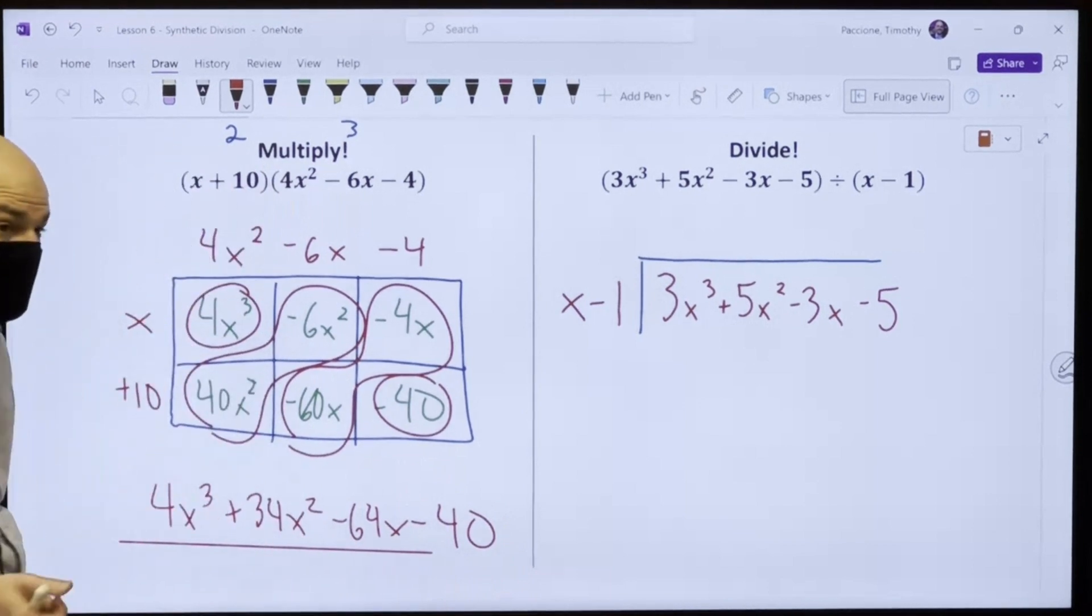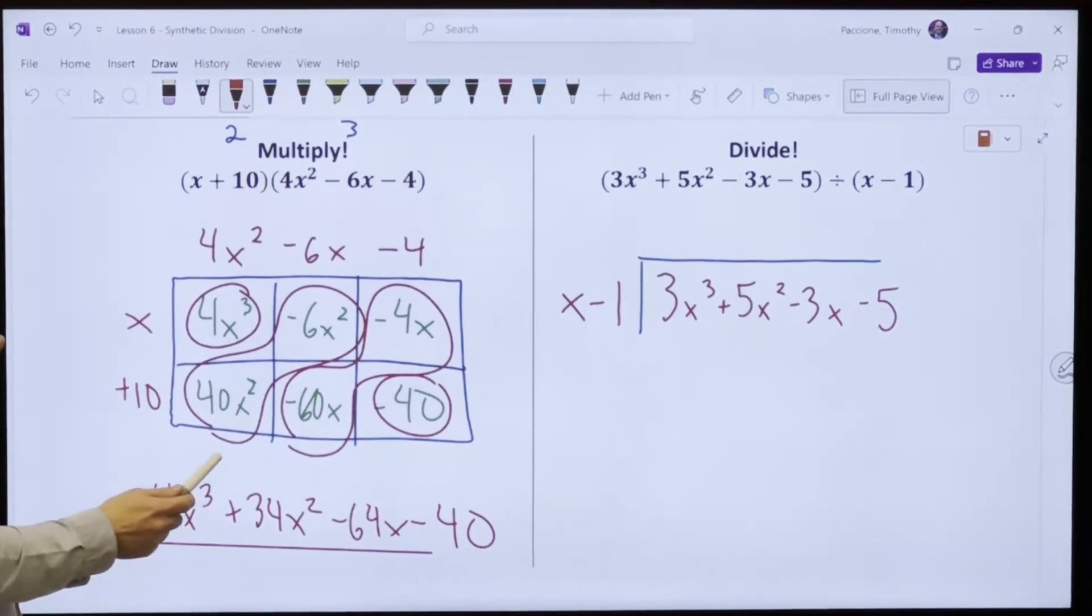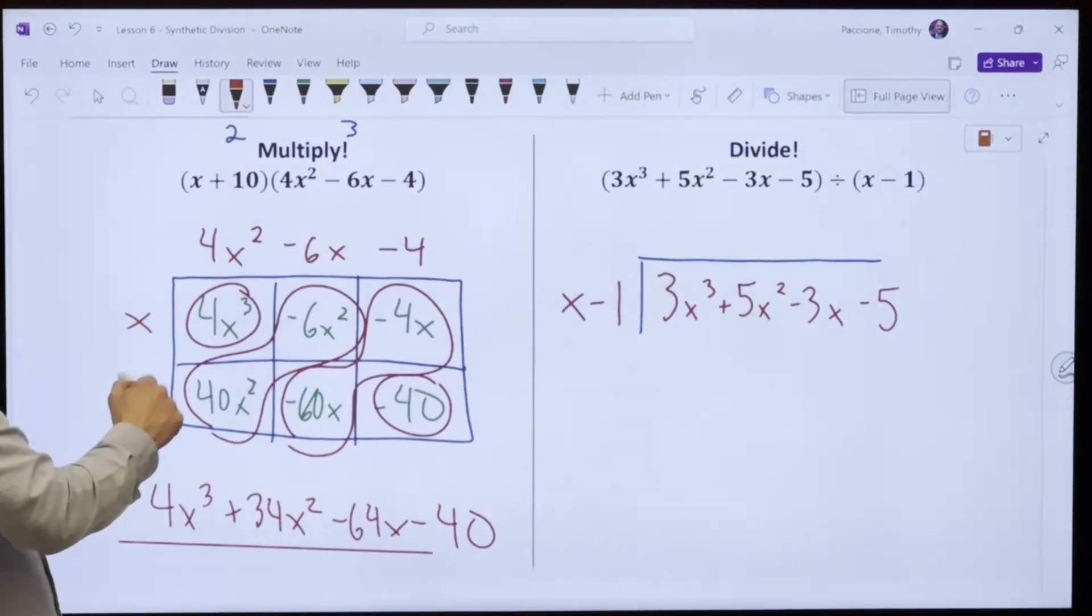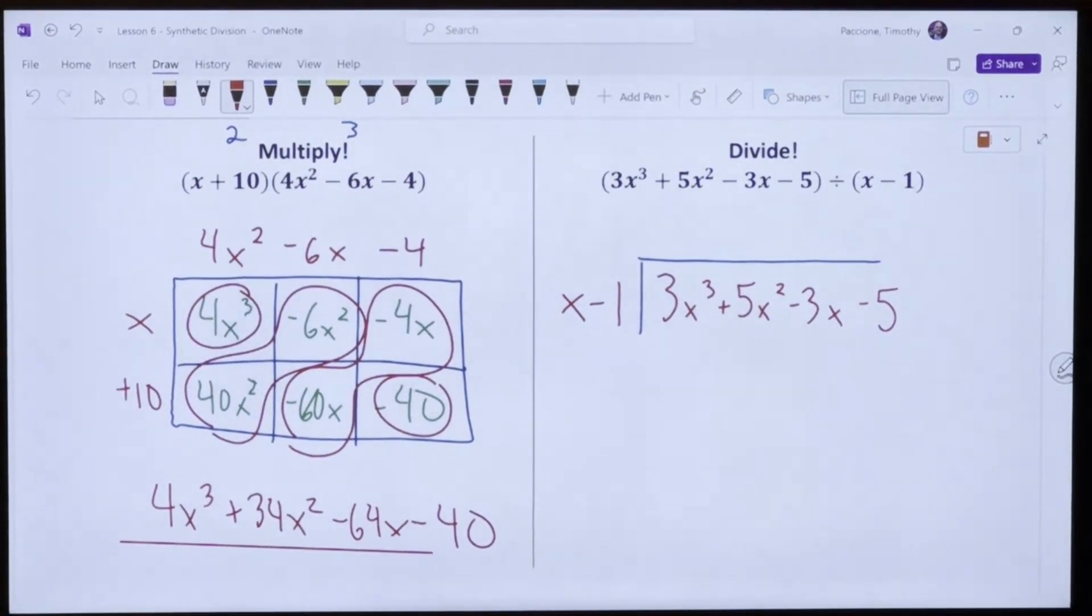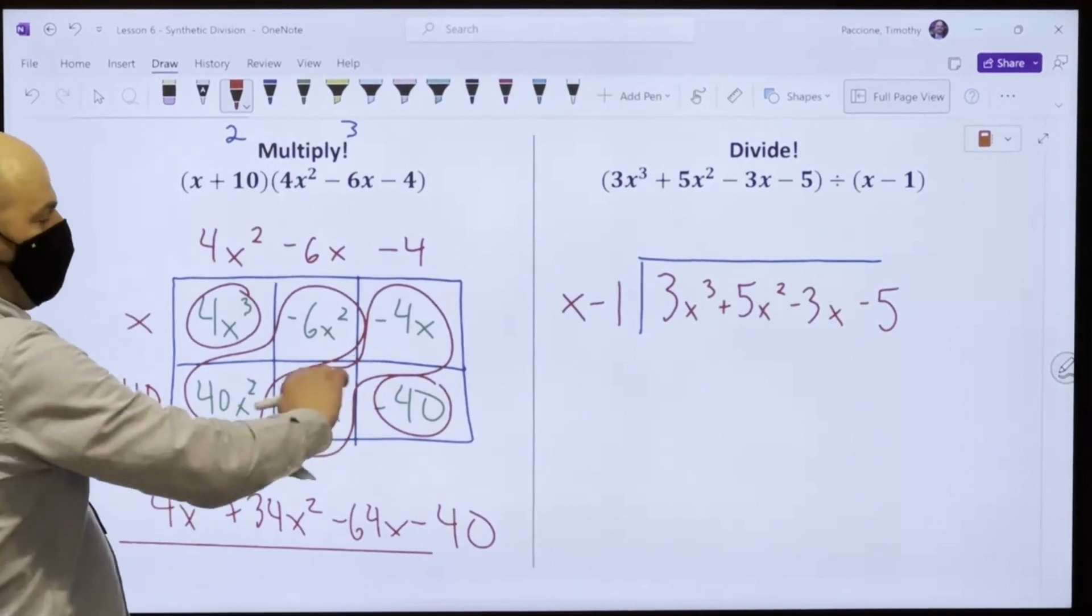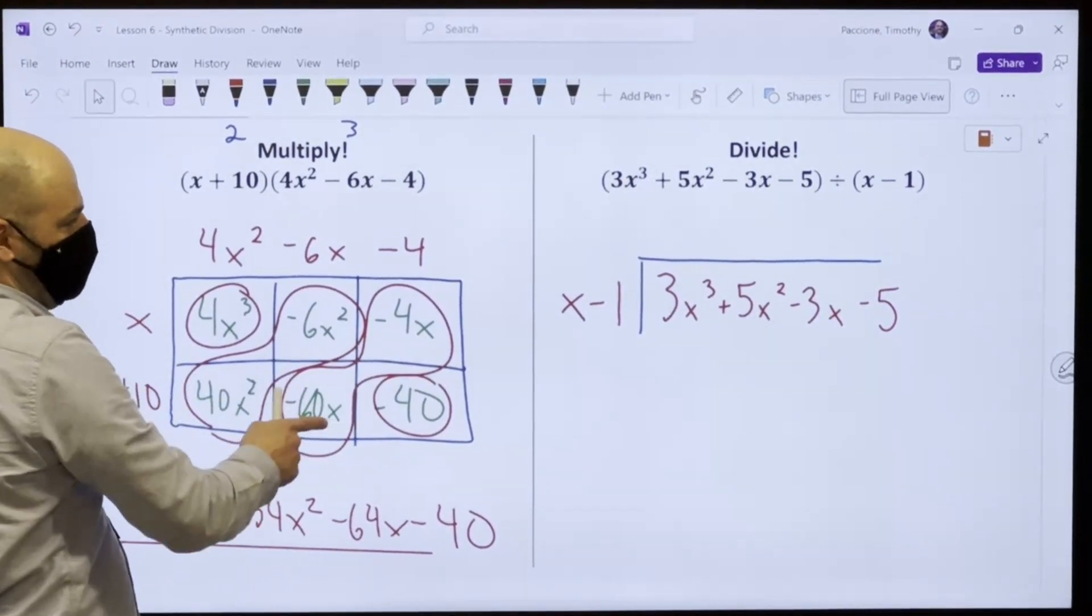Remember that when you do this, you get these nice like terms. These ones stand alone. So I get 4x to the third plus 34x squared minus 64x minus 40. Now the new thing that you can do is you can then take this, divide it by this, and you should get that when you check your work.